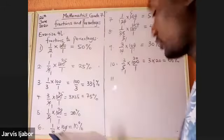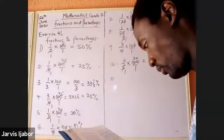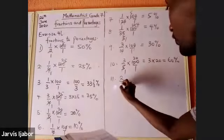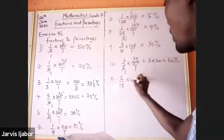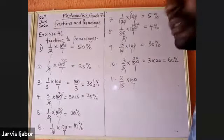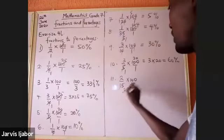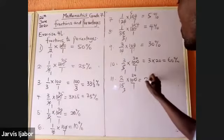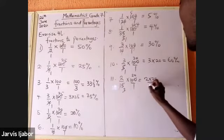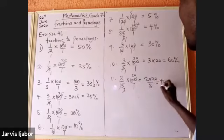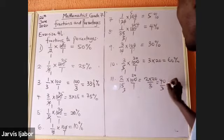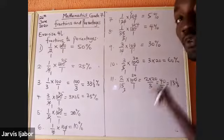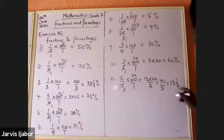Number eleven: 2 over 3 times 100 over 1 — 5 goes into each, giving 2 times 20 over 3, which is 40 over 3. 3 can go into 40 thirteen times with remainder 1, so the answer is 13 and one-third percent.